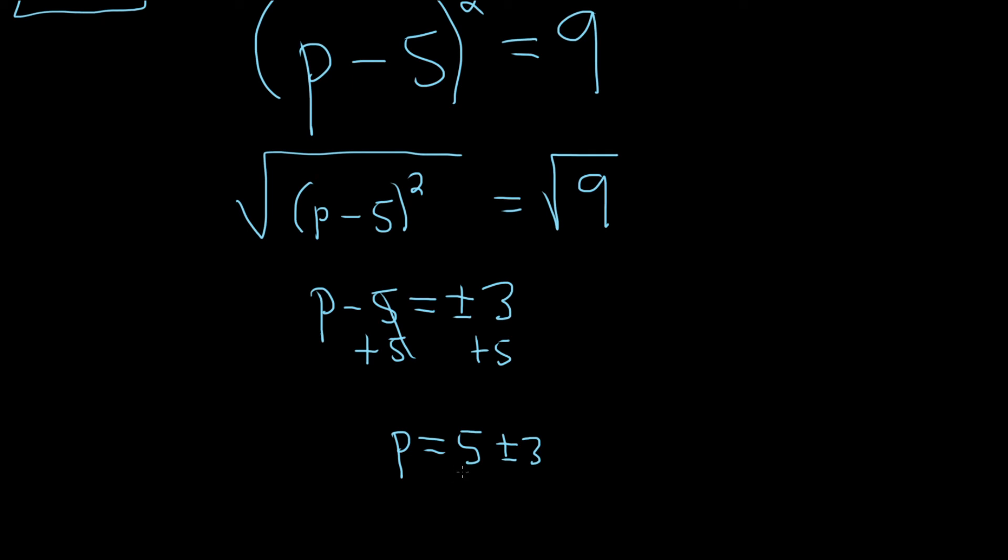And then you can just do each one. You do the plus and you do the minus. So let's do the plus first. So p equals 5 plus 3. That gives us 8. That's one of our answers. And then p equals 5 minus 3. That gives us 2. That's another answer.